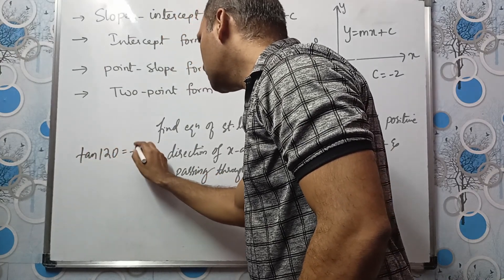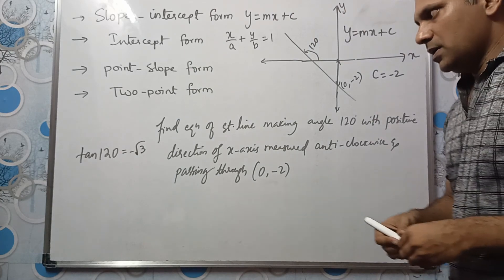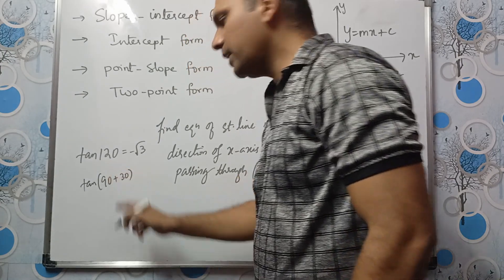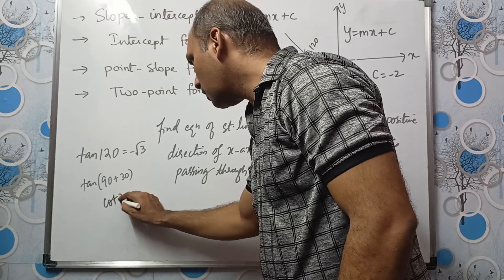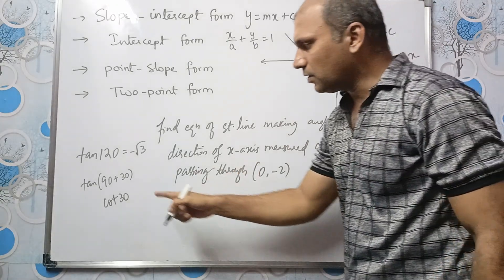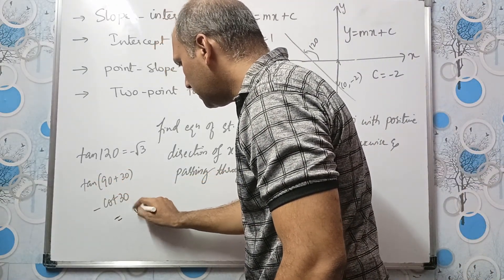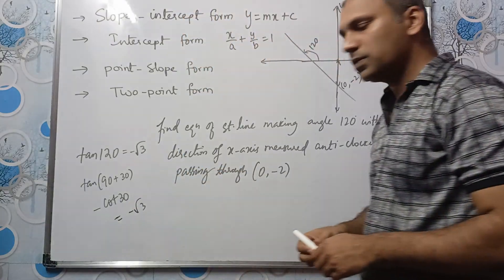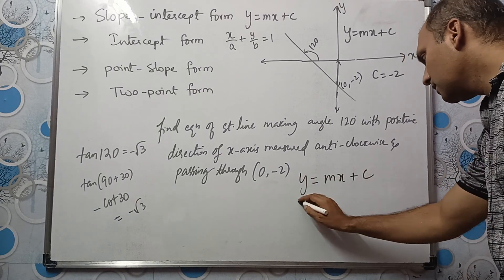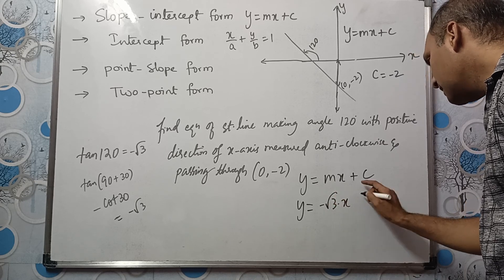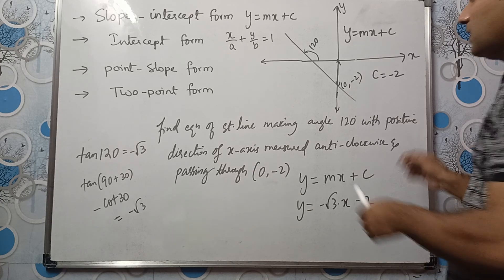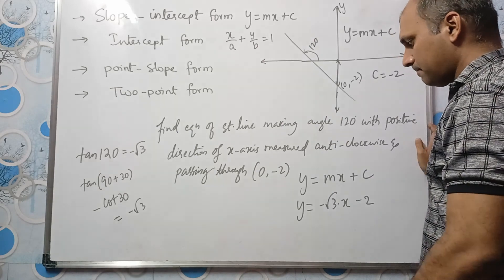tan(120°) = tan(90° + 30°) = -cot(30°). Since 120° is in the second quadrant, tan is negative. cot(30°) = √3, so tan(120°) = -√3. Therefore m = -√3. Substituting: y = -√3·x + (-2). This is the equation of the straight line in slope-intercept form.